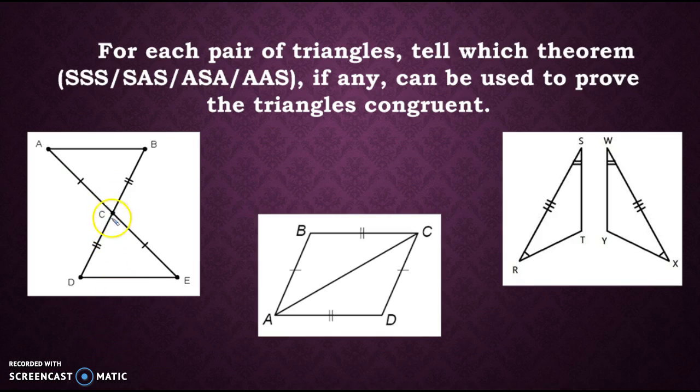So for the first example, I can see right off the bat that I have vertical angles, so I can go ahead and label those. And then I have two sides that are congruent in each triangle. This angle touches both of my sides, so this would make it side, angle, side. So these are congruent by side, angle, side.